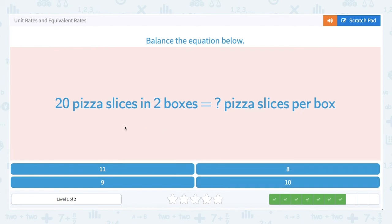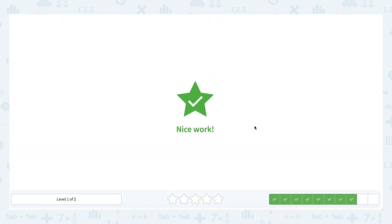20 pizza slices in two boxes is how many pizza slices per box? Again, we're just dividing this between two boxes, which is pretty simple. We divide 20 in half, 10 slices per box.